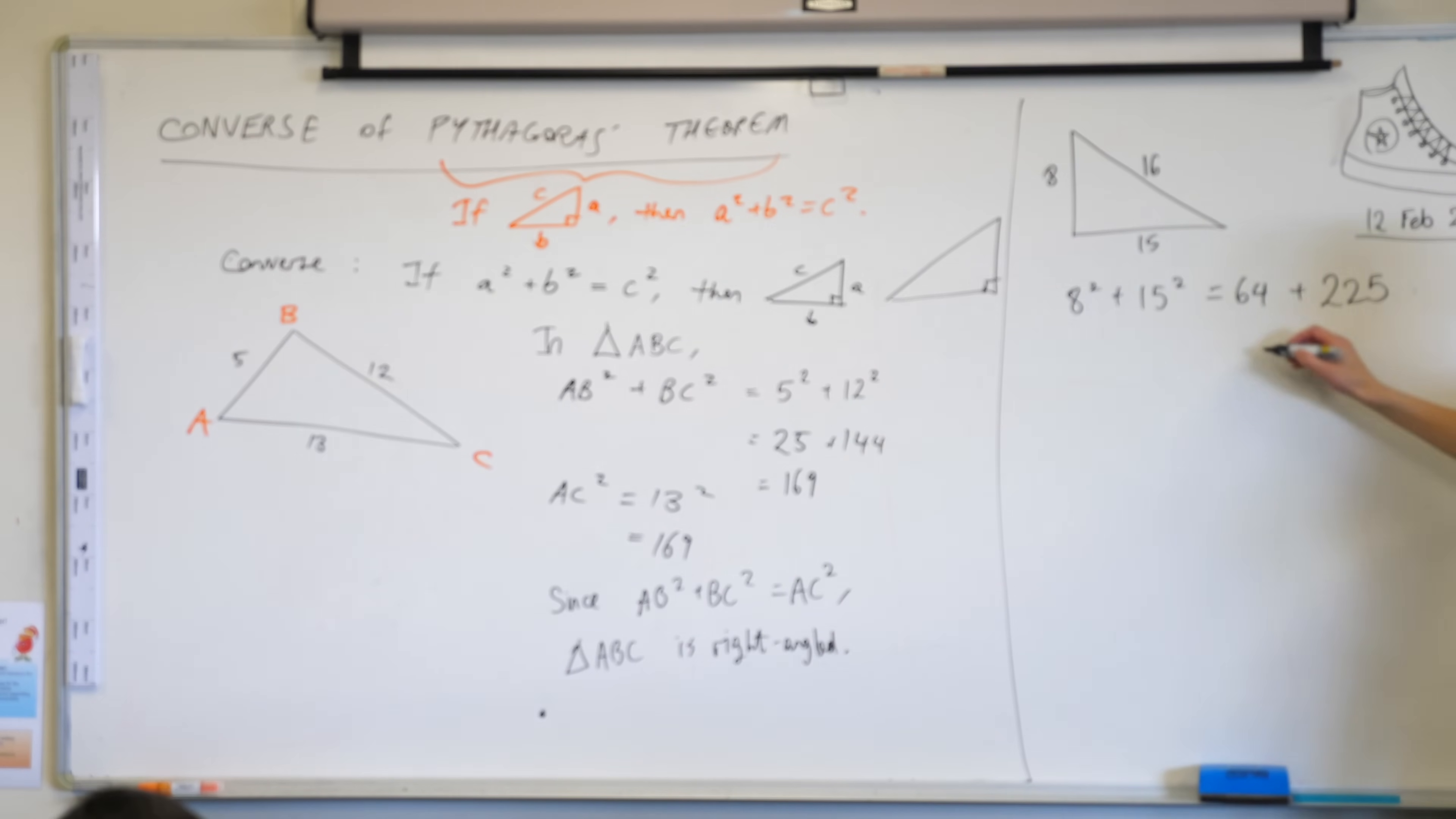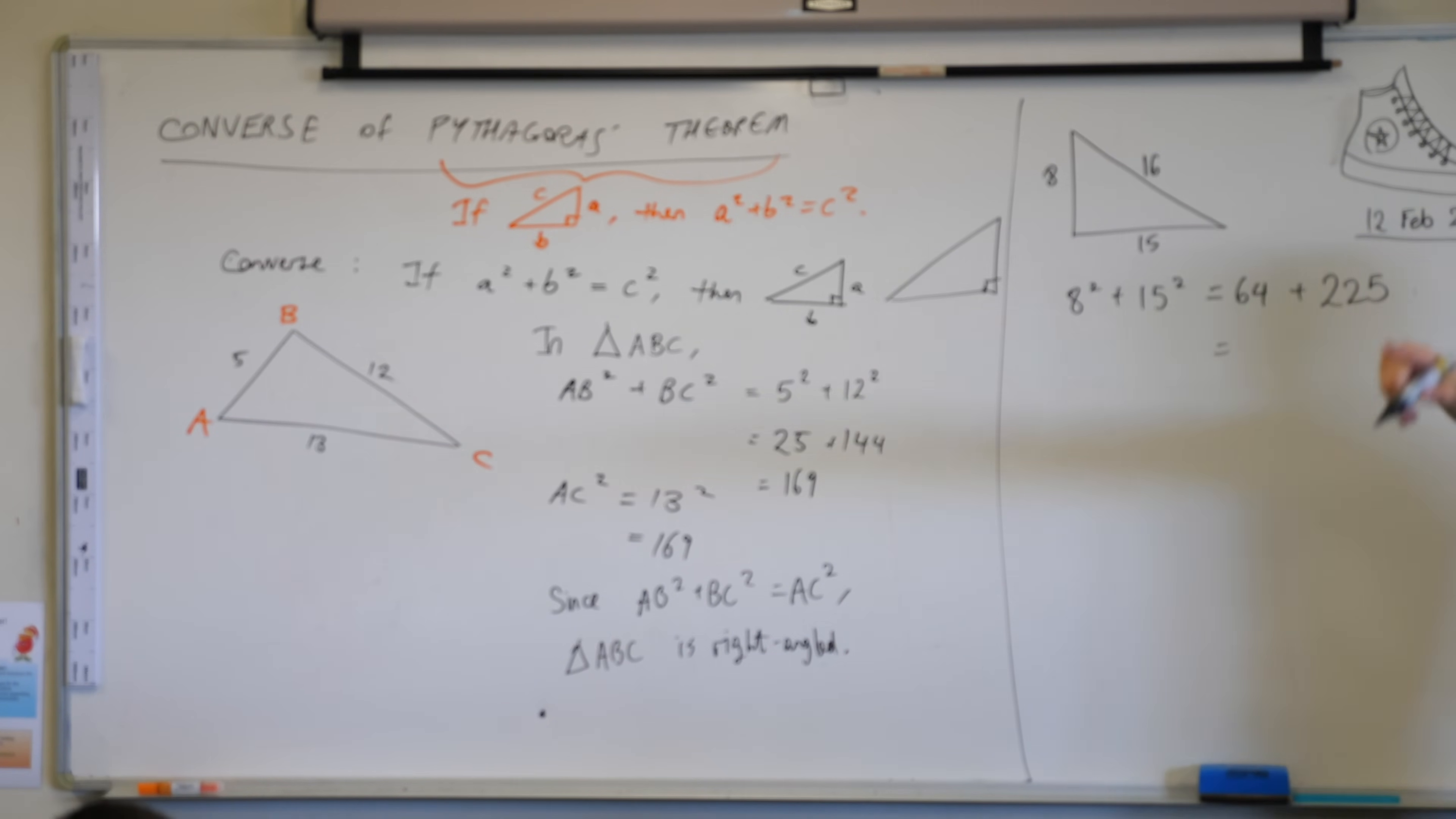64 plus 225. Do we need to write this vertical, or do you reckon we can handle it? Yeah, do you want to have it? 200 and the 10s add up to 8. The units add up to 9. And I gave you nice numbers, and you didn't have to carry 1s or anything. So there we go. That's the sum of the squares of the shorter sides.